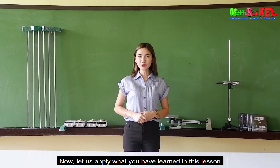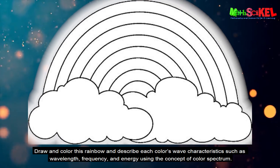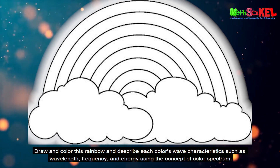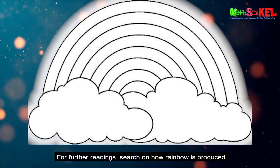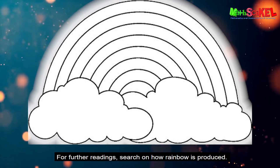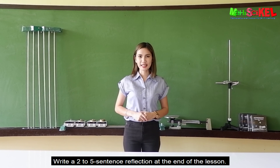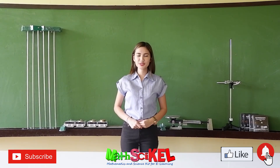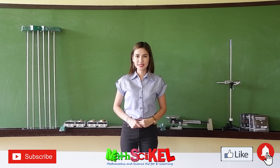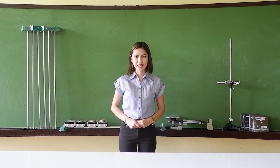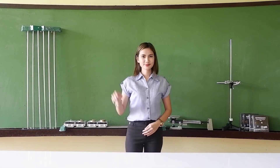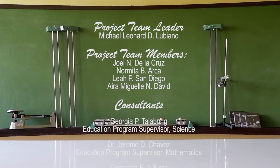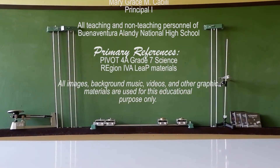Now let us apply what you have learned. Draw and color a rainbow and describe which colors have higher or lower values for wavelength, frequency, and energy, using the concept of the color spectrum. For further reading, search how a rainbow is produced. Write a 2-3 sentence reflection at the end of the lesson. Please do not forget to subscribe to our YouTube channel MadCycle, like our videos, and hit the bell button. I hope you learned from today's video. On the next episode, we will look at the conditions necessary for heat transfer. This is your science teacher — see you all next time!